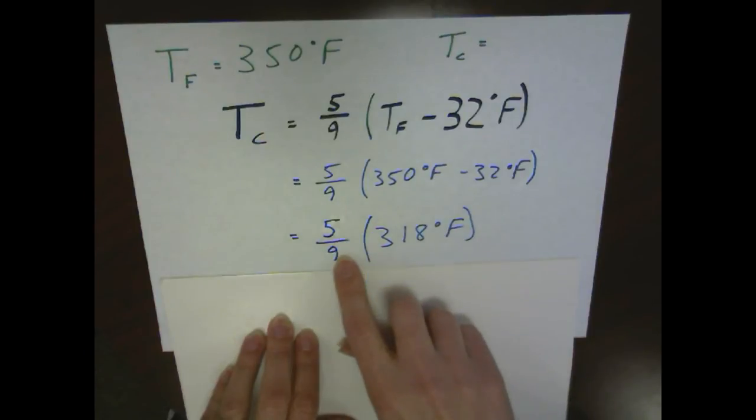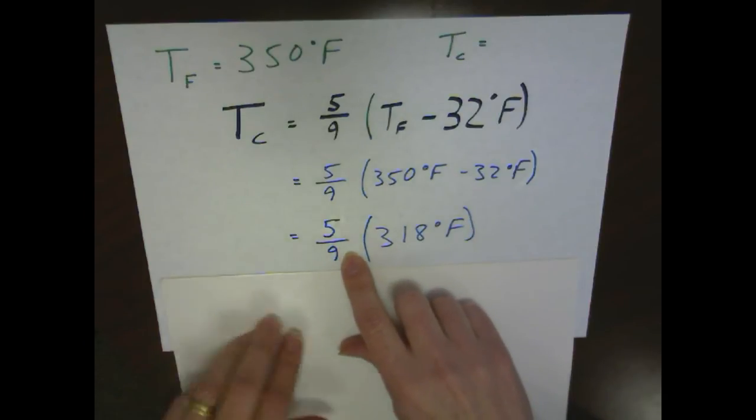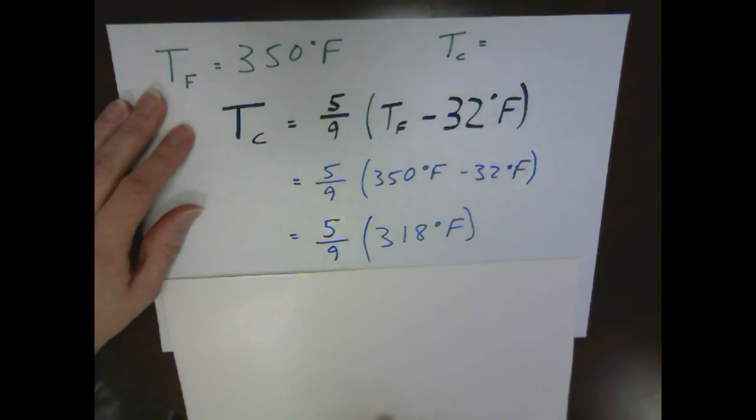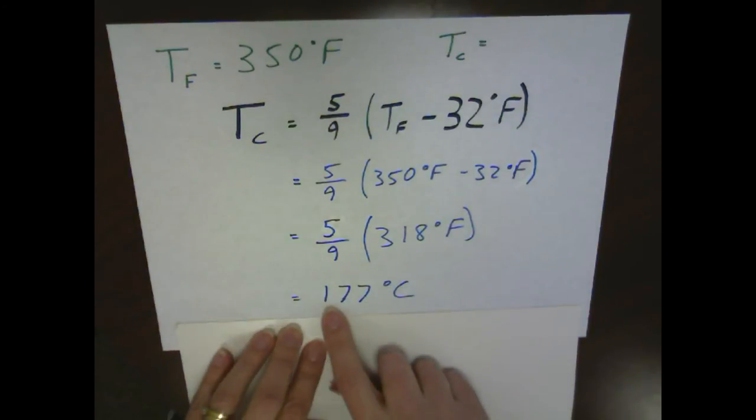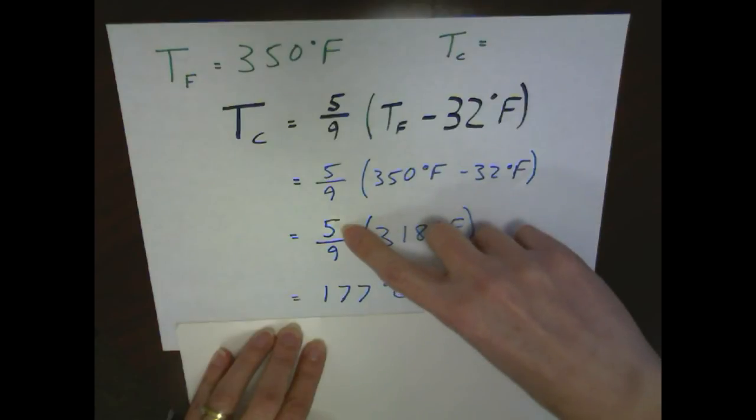Now remember our scales here, this is really 5 degrees Celsius is the same size as 9 degrees Fahrenheit. So when we multiply that 5 ninths times the 318, we've got a temperature of 177 degrees Celsius. So it becomes Celsius now instead of Fahrenheit because that was 5 degrees Celsius and 9 degrees Fahrenheit.